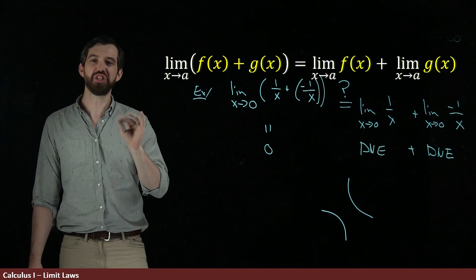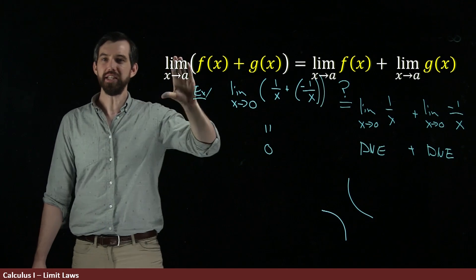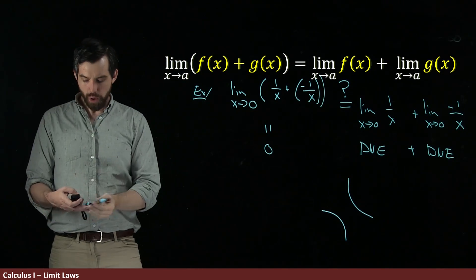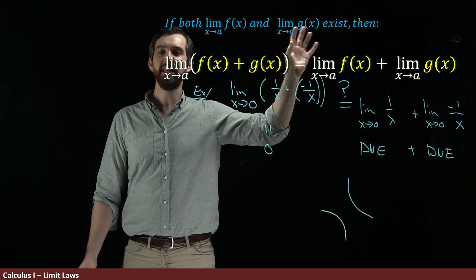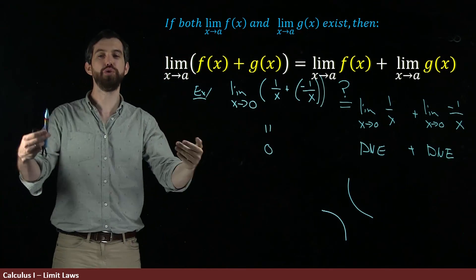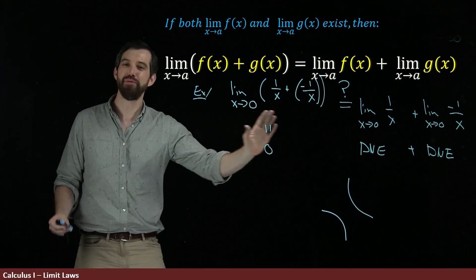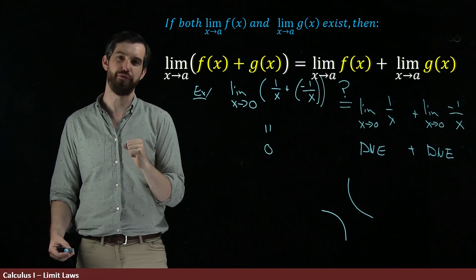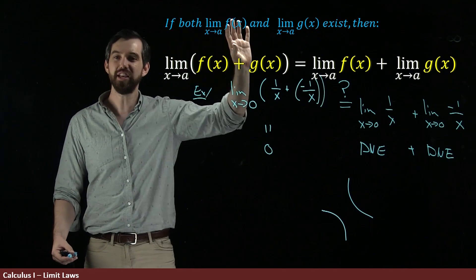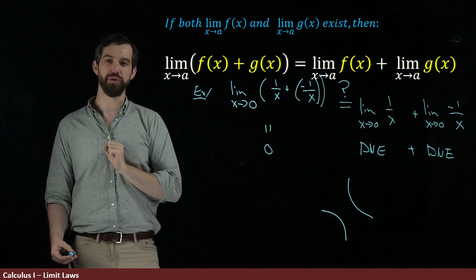And what is needed is an extra qualification. This is true if we have the property that both the limit of f of x and the limit of g of x individually exist. And that was the problem here. These individual ones did not exist, and so you sort of got this nonsense formula. But if you add this property, then we get this true statement.